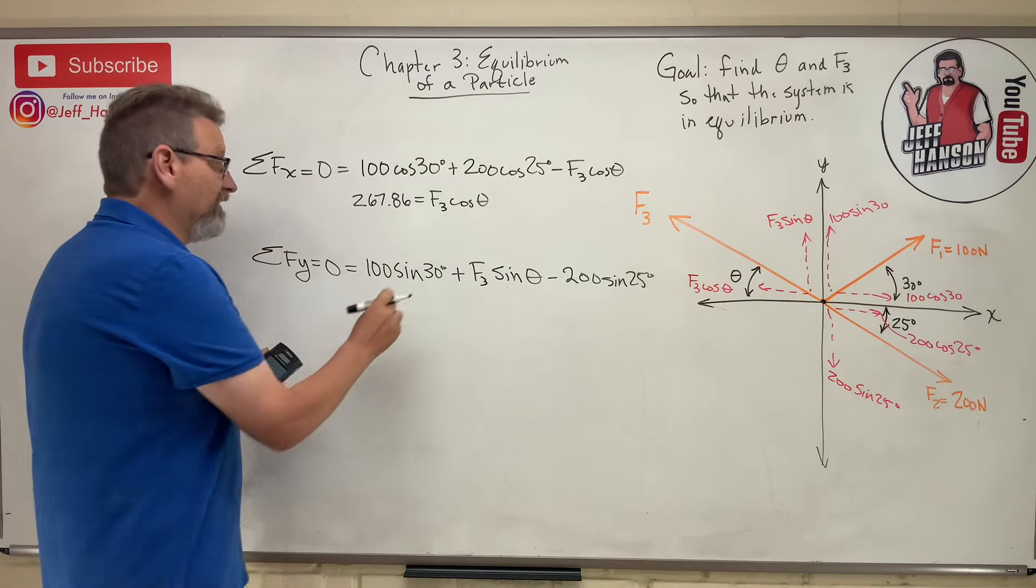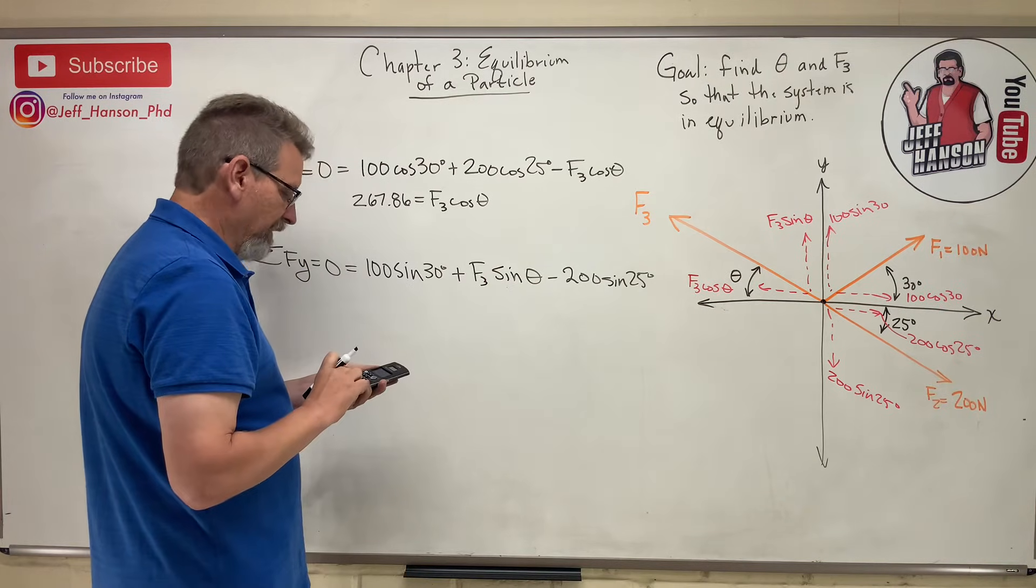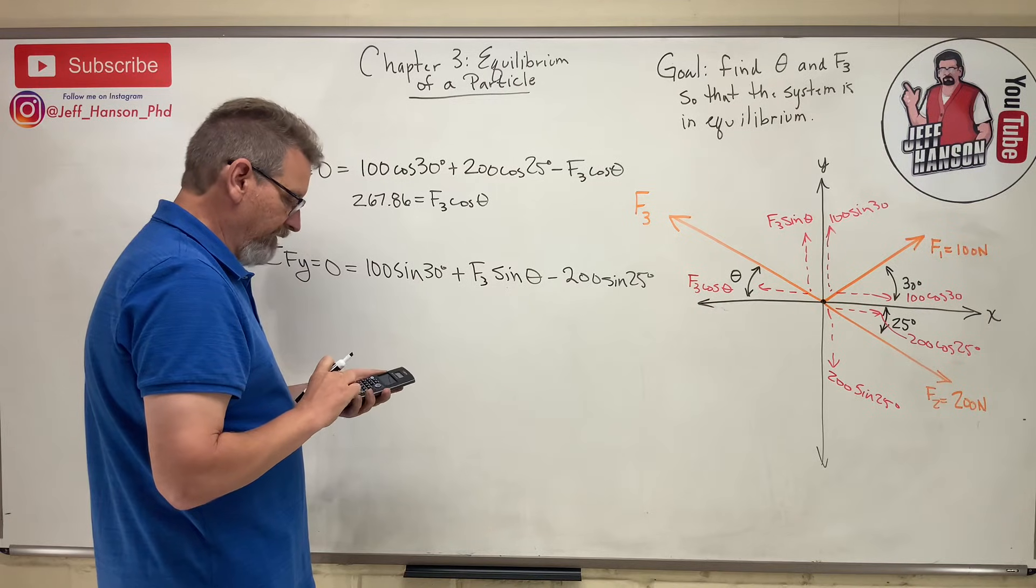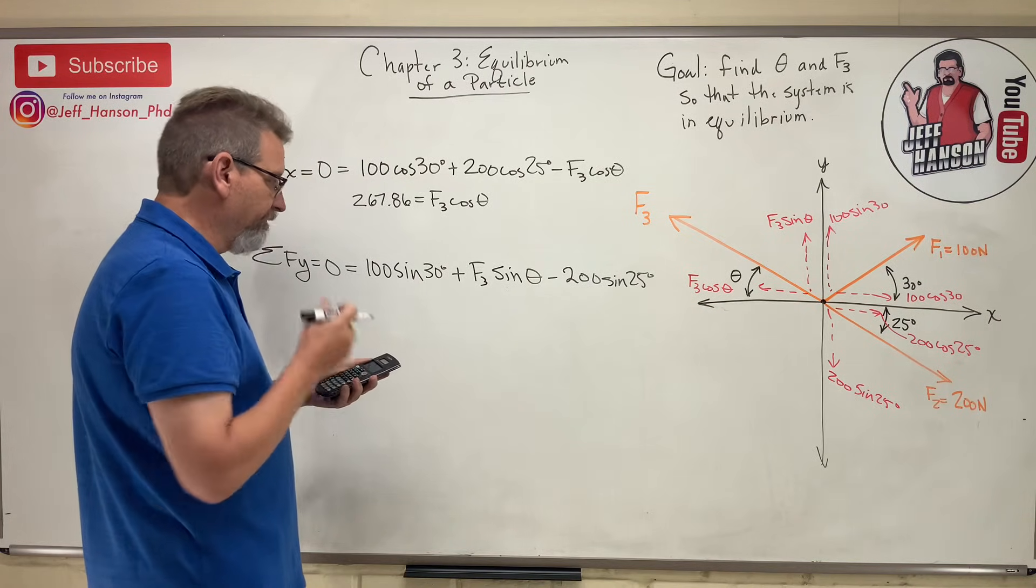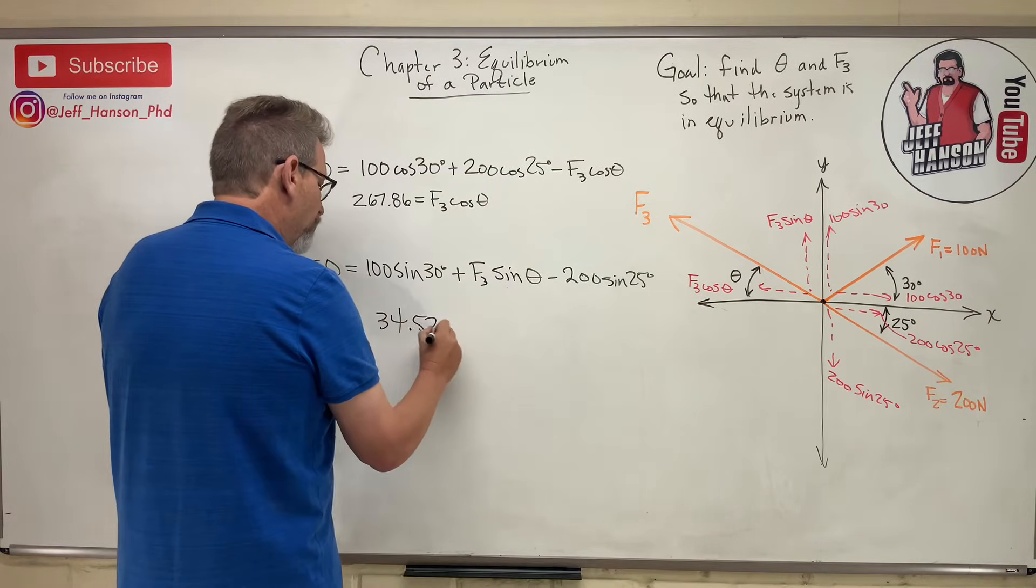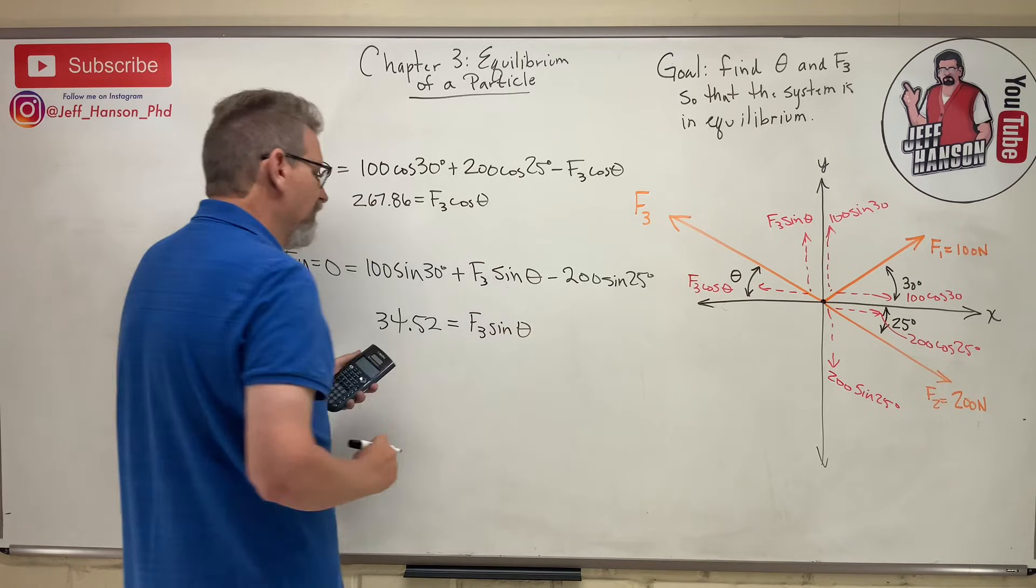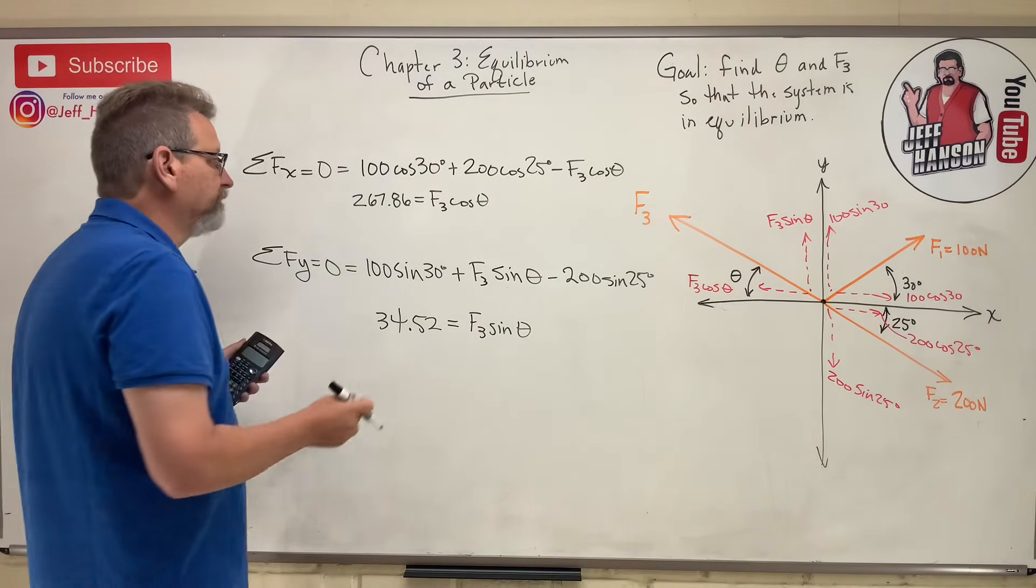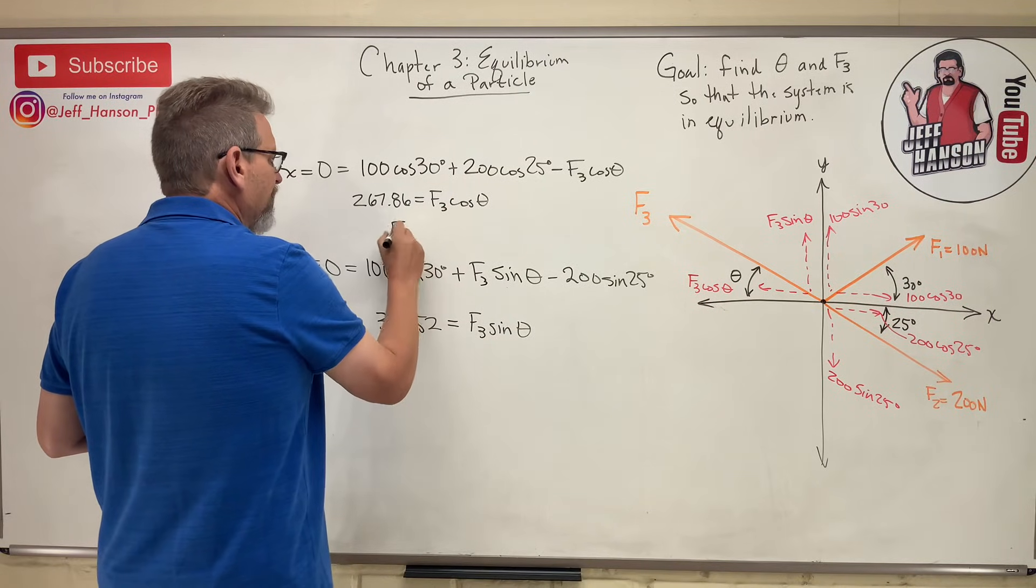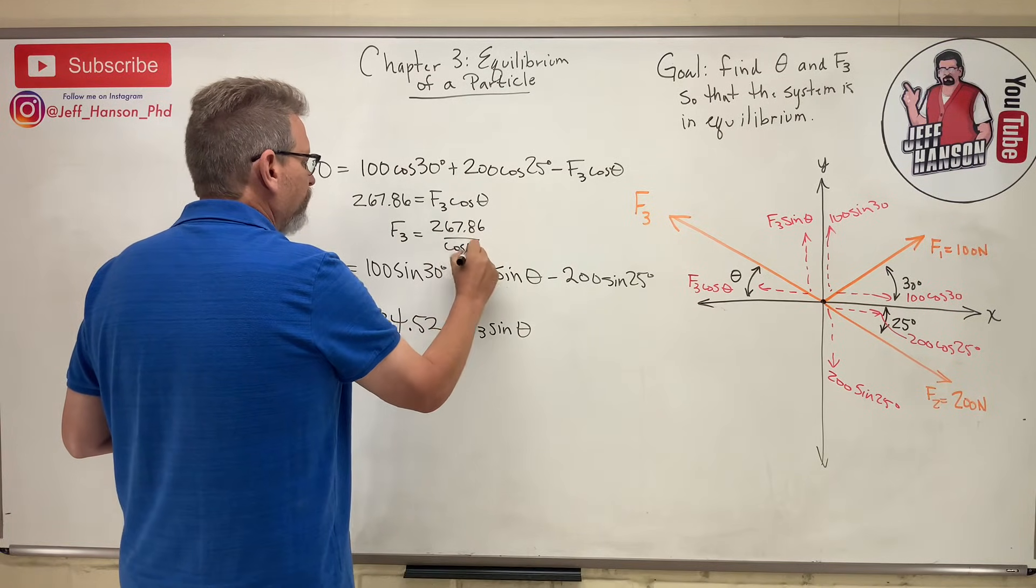Let's do the same thing here. Sin of 30, that's a half, so that's 50, and then 50 minus that guy, so 50 minus 200 sin 25 is equal to negative 34.52, but we'll move that negative to the other side, so 34.52 is equal to F3 sin theta. Now the trick here is to go after the cosine. So I want to take this and move it to the other side, so F3 is equal to 267.86 divided by cos theta.